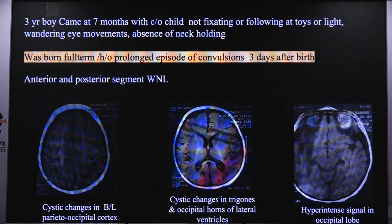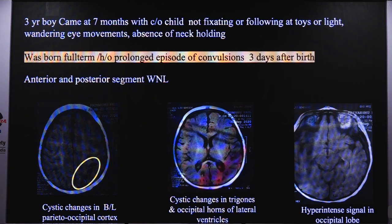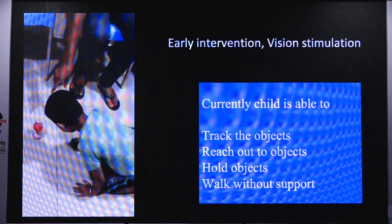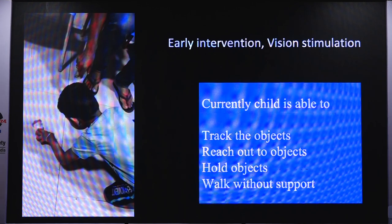To illustrate: a patient who came at age 7 months with parents complaining the child was not fixing or following toys or light, had wandering eye movements, and no neck holding. Born full term, the child had a history of prolonged convulsions immediately post birth. Anterior and posterior segment were within normal limits. MRI showed cystic lesions in bilateral parietooccipital cortex, cystic changes in the trigones and occipital horn of the lateral ventricle, and hyperintense signal in the occipital lobe. With early intervention and vision stimulation, the child can now track objects, reach and hold objects, and walk without support.